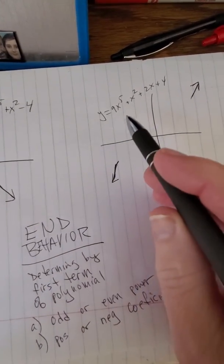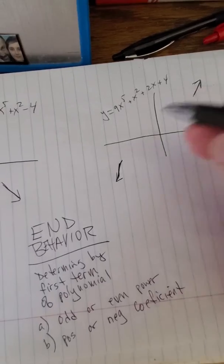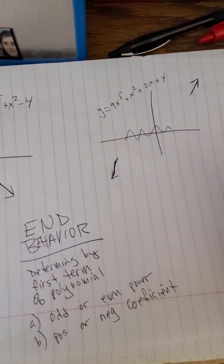Whereas this guy over here, y equals nine x to the fifth plus blah blah blah. You'll have a whole bunch of wiggles and squiggles in the middle, whatever.